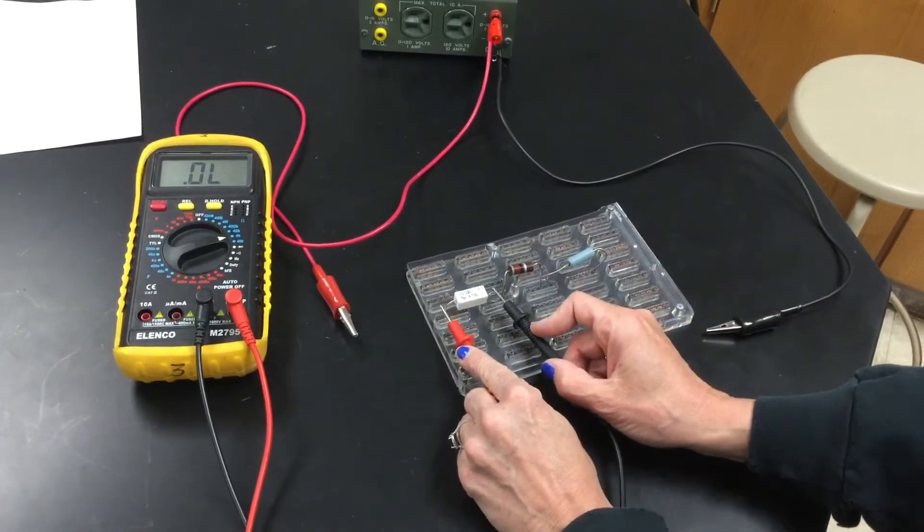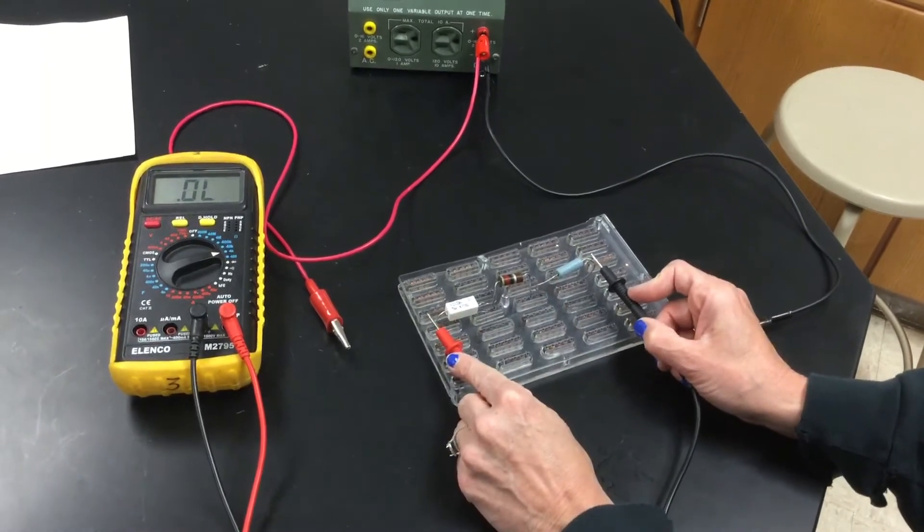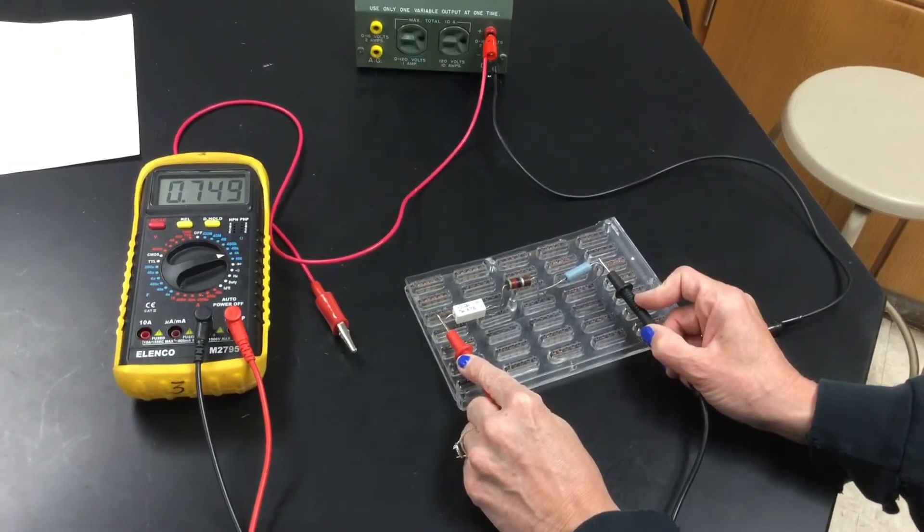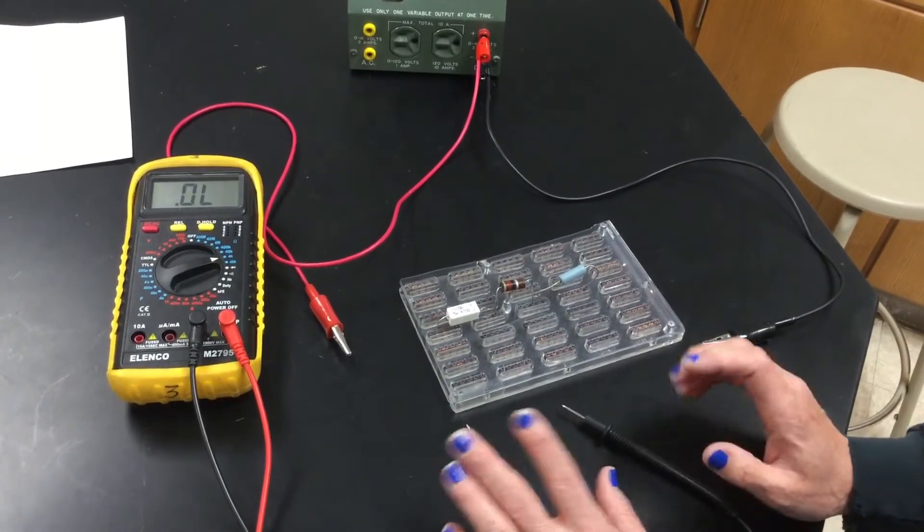So this is R1, R2, R3, and then R total would be like so. Notice for resistance, you do not have the power attached, only the multimeter.